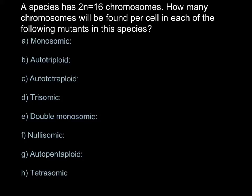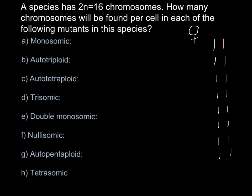The first question is monosomic. Let me show here the normal number for this particular organism, which is 16. That means that half of the chromosomes came from the female side and half from the male parent. The normal number, as you see, is 16 chromosomes.